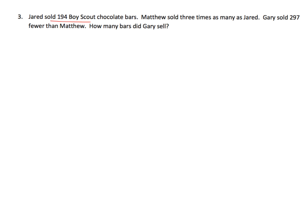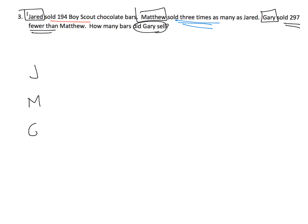This is a beautiful problem. Jared sold 194 Boy Scout chocolate bars, Matthew sold three times as many as Jared, and Gary sold 297 fewer than Matthew. How many bars did Gary sell? We have three characters: Jared, Matthew, and Gary. I'm going to label three tape diagrams — Jared, Matthew, and Gary — and give each one the exact same length tape diagram to start.